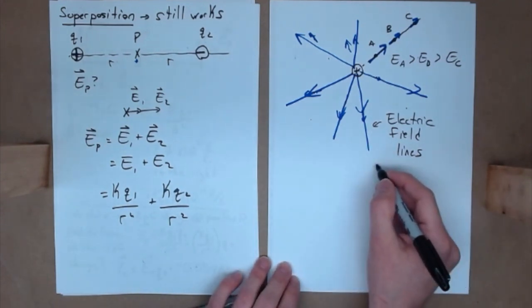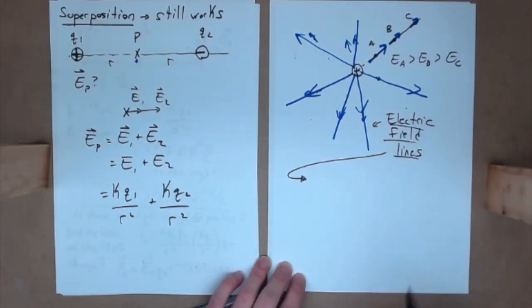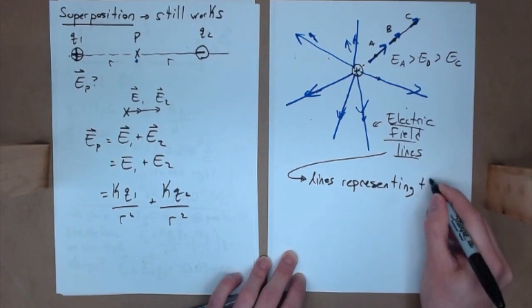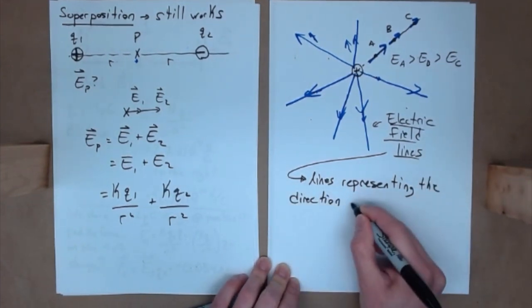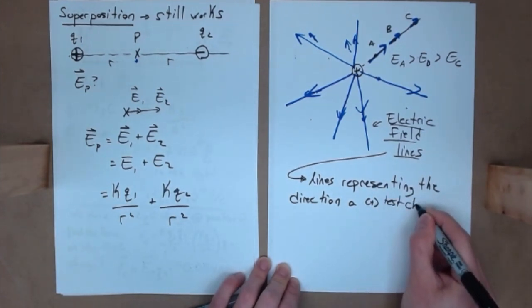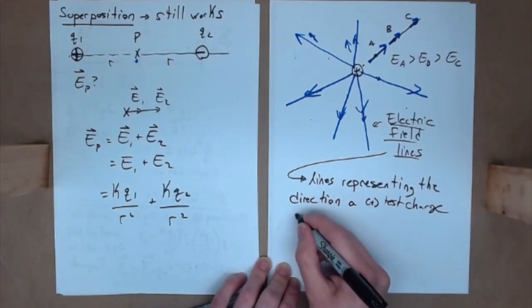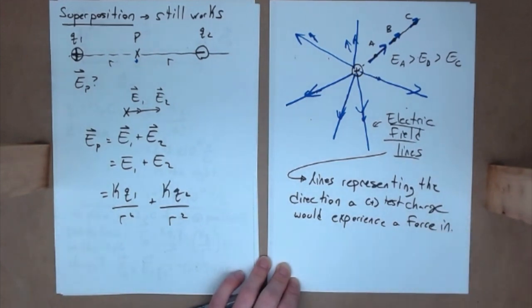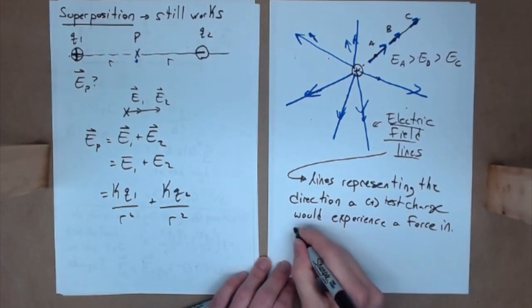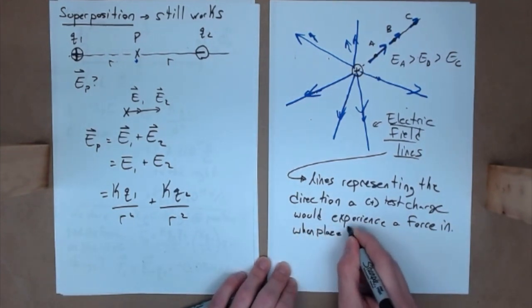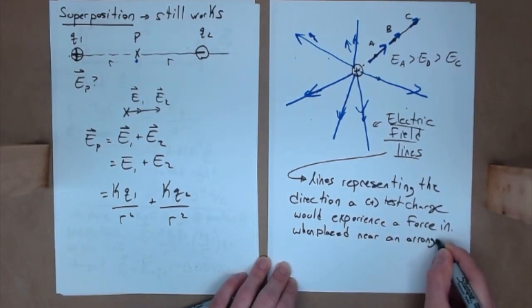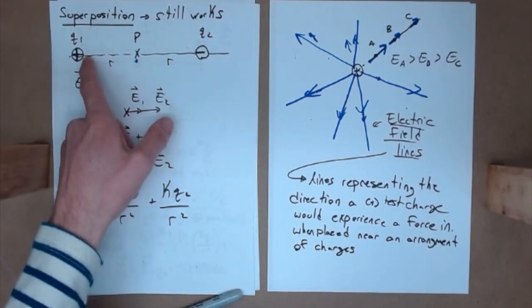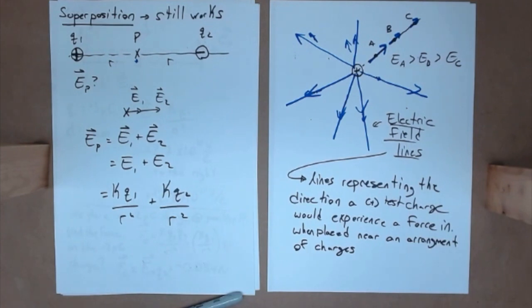Electric field lines are lines representing the direction a positive test charge would experience a force in. I can have multiple source charges, as in superposition, and the electric field lines represent the direction of force that a charge placed there would experience.